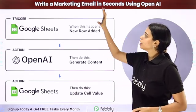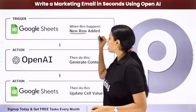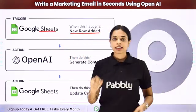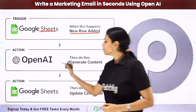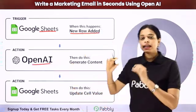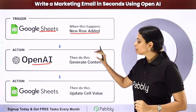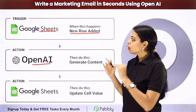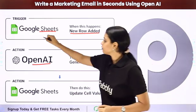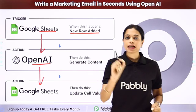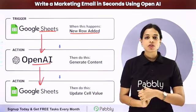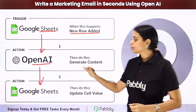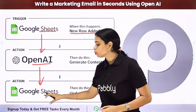I wish to create marketing emails. So every time I add a new title in my spreadsheet — here we have taken the example of a Google Sheet — then automatically with the help of OpenAI, an email is generated and the same email is updated as a cell value in the same Google Sheet. For this, we will have to set up some integration between the two applications, and the same thing can be done using Pably Connect software. Your trigger application would be Google Sheet, and your action applications — first would be OpenAI, and then it would be Google Sheet.